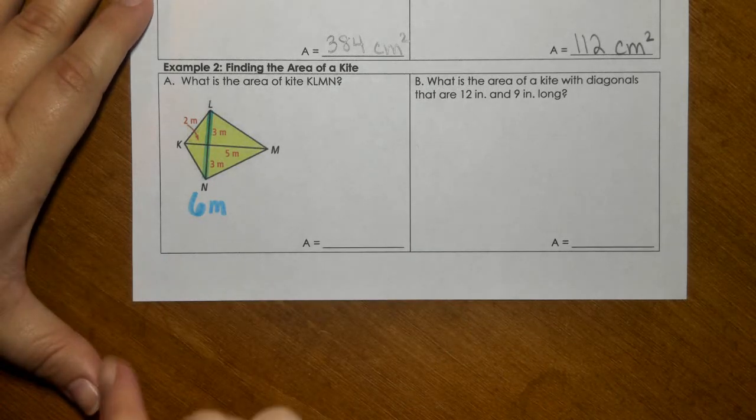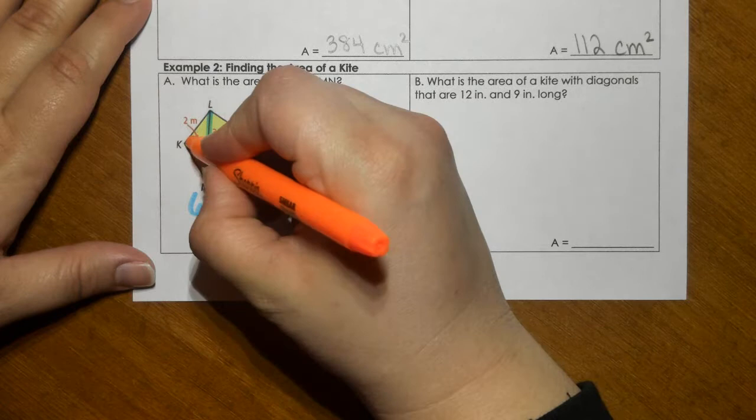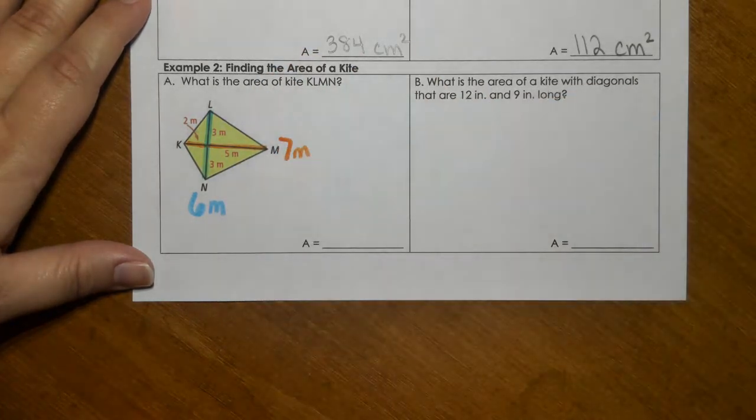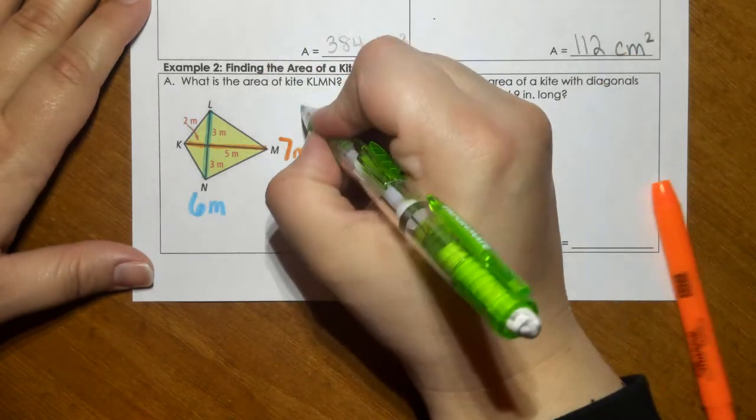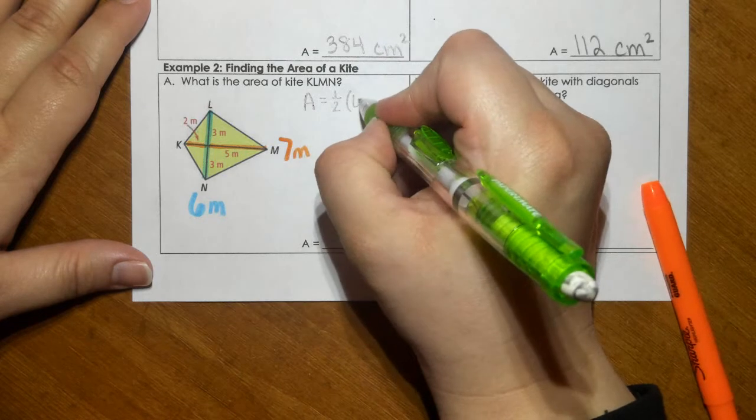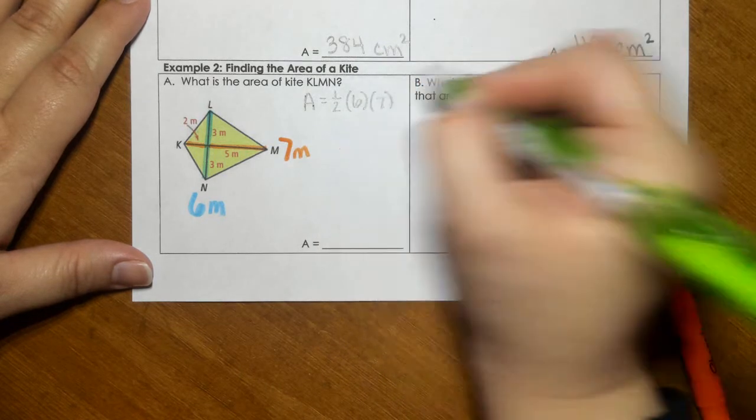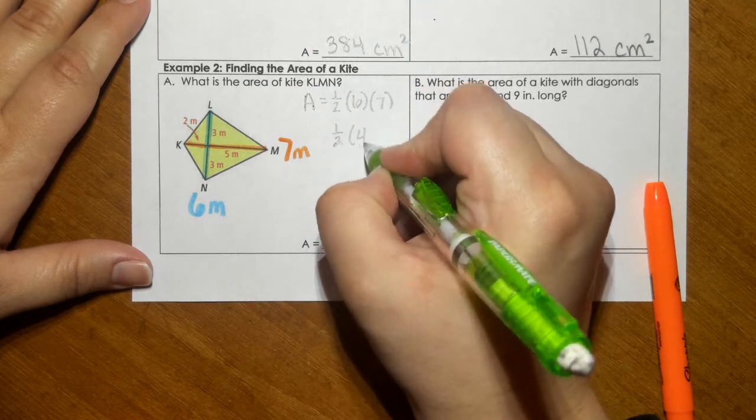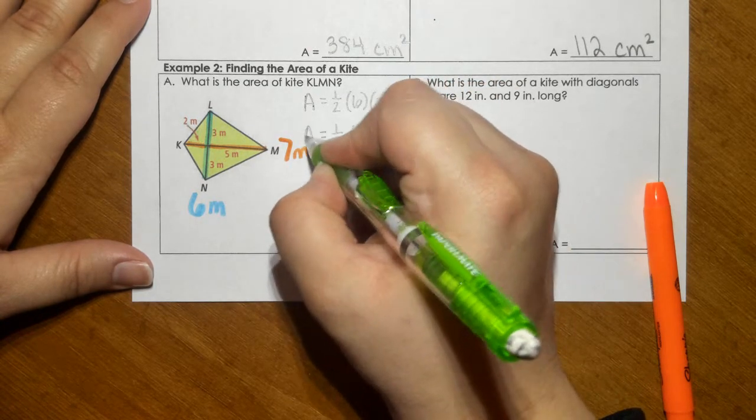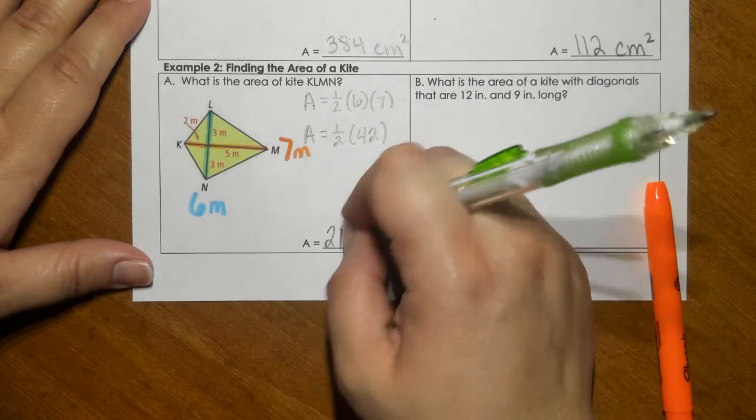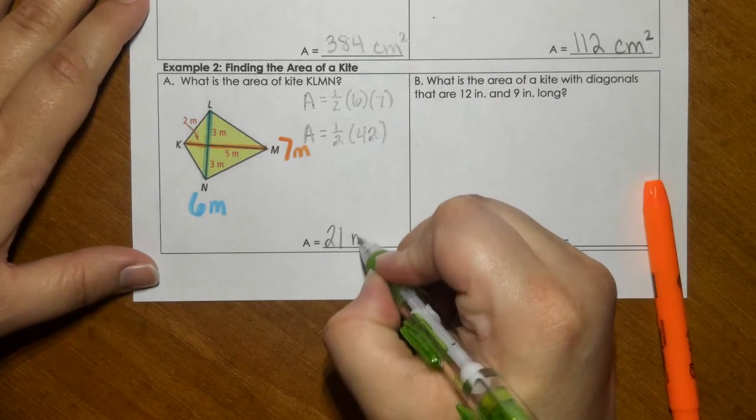And then we have this one that's 2 and 5. So that's going to be 7 meters. So area, diagonal 1 is 6, diagonal 2 is 7. And so that would give me 42. And half of 42 is 21 meters squared.